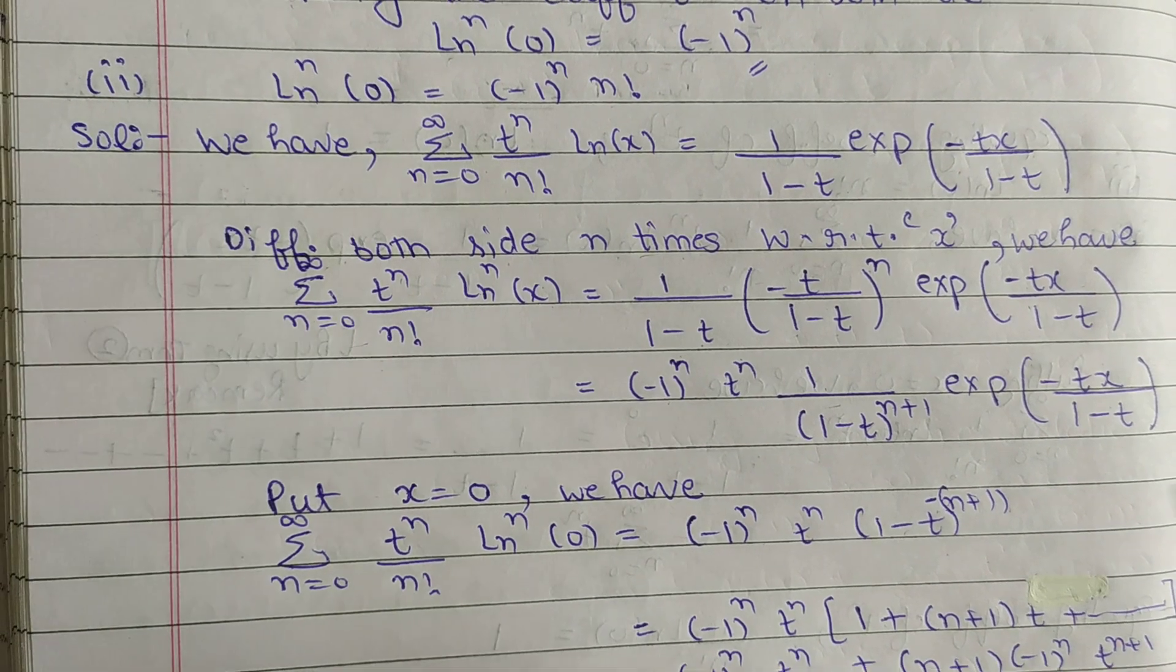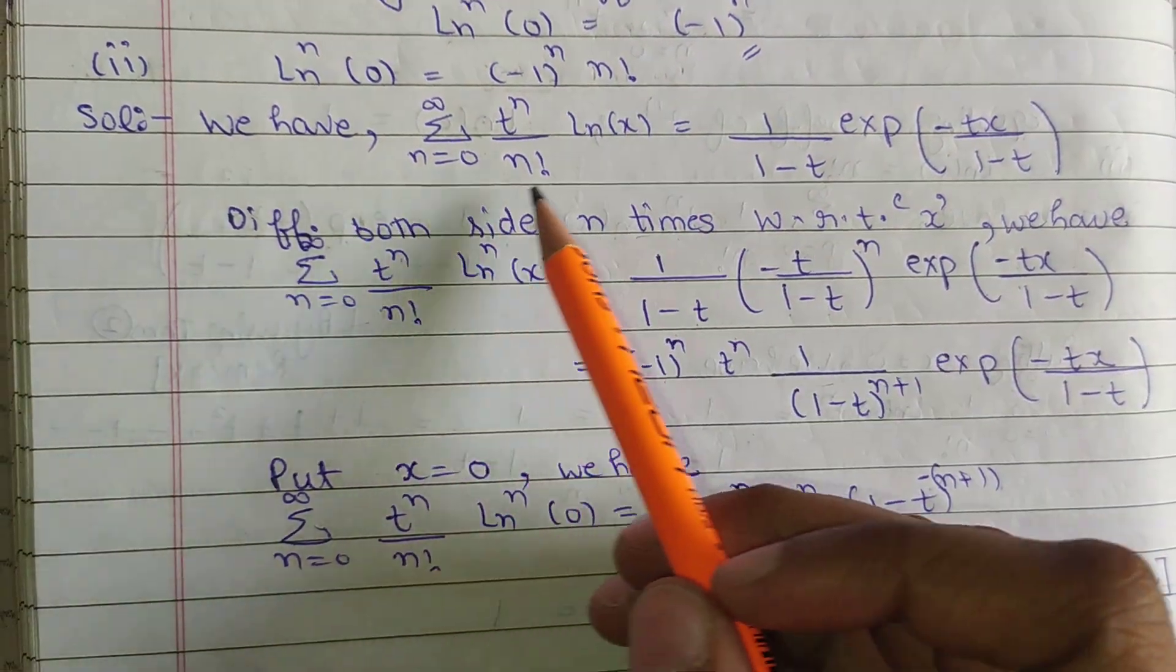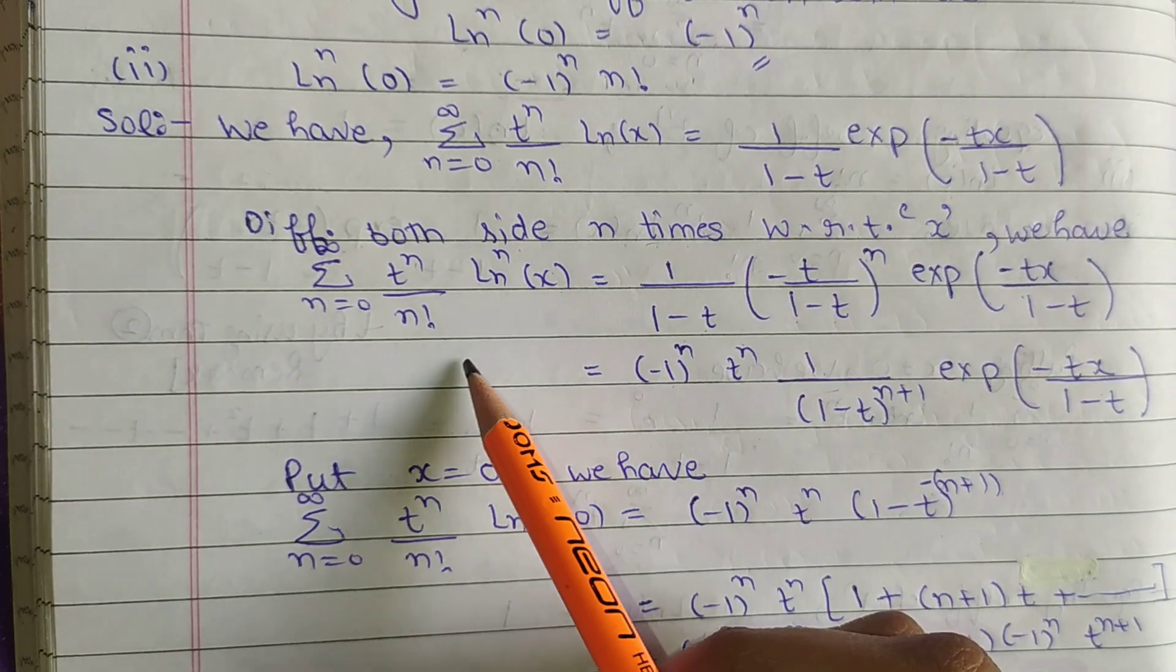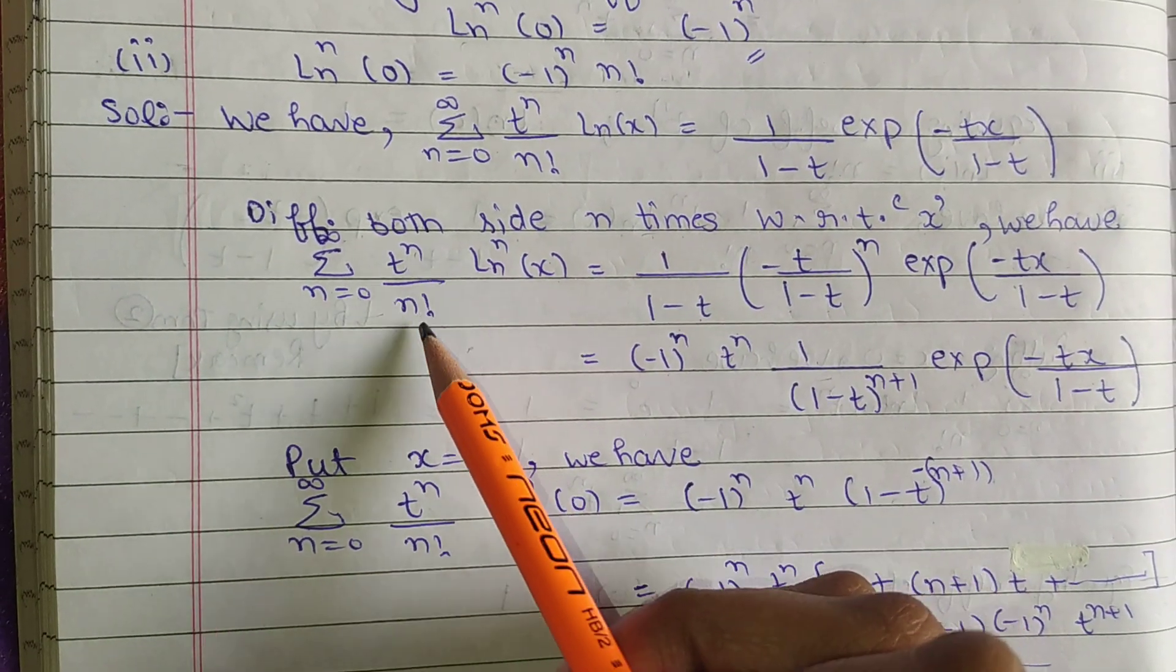of that ln^n(0) is equal to (-1)^n n factorial. We have generating function, then differential with respect to x up to n times, then summation n equals to infinity t^n